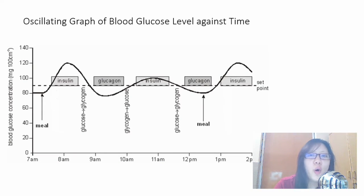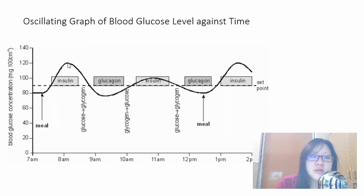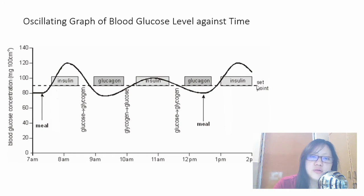Here's a graph of blood glucose concentration against time. You can see the line fluctuates around a set point, showing that a negative feedback mechanism is in place, and how insulin and glucagon affect blood glucose concentration. After meal time, glucose concentration increases, so insulin is secreted causing it to drop. Then glucagon is secreted because levels are too low, raising blood glucose again. After meals, fluctuations are larger — the peaks are noticeably higher.